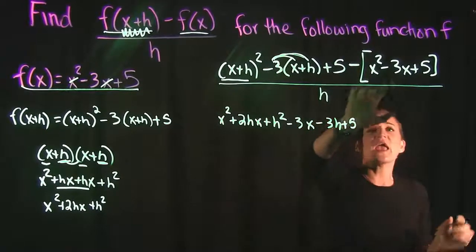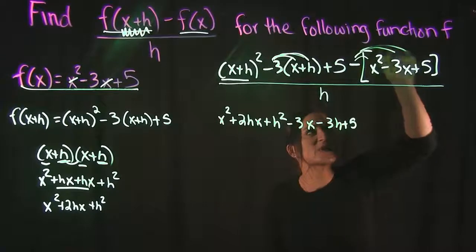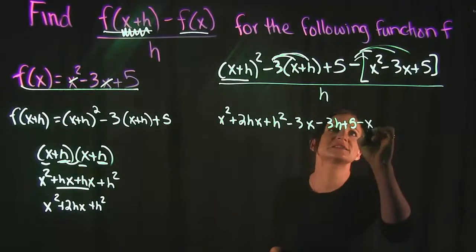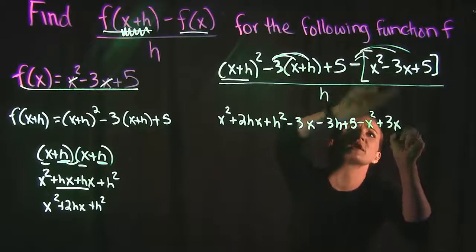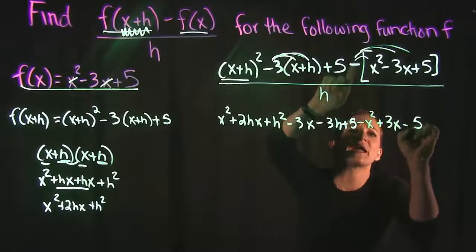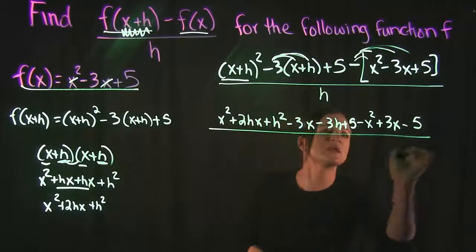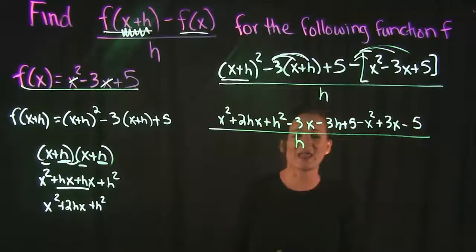And then back here at the end, we just need to distribute the negative to everything. So that's minus x squared, a minus negative turns that into a positive 3x, and then a minus 5. And we need to remember that this was all over h.